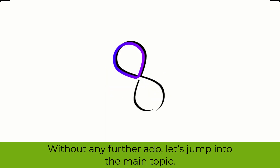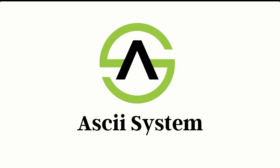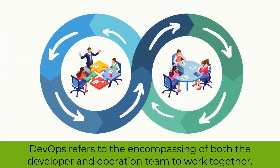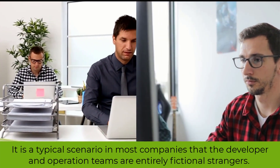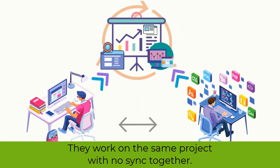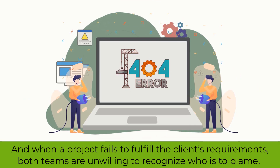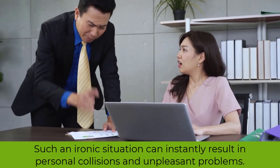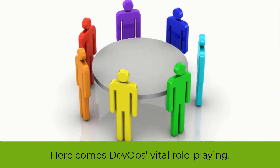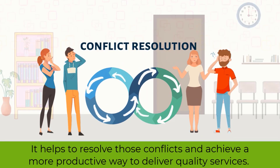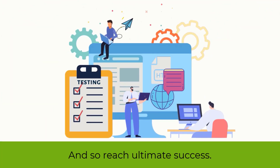Without any further ado, let's jump into the main topic. DevOps encompasses both the developer and operation team to work together. It is a typical scenario in most companies that the developer and operation teams are entirely unfamiliar strangers. They work on the same project with no sync together. And when a project fails to fulfill the client's requirements, both teams are unwilling to recognize who is to blame. Such an ironic situation can instantly result in personal collisions and unpleasant problems. Here comes DevOps' vital role-playing. DevOps stands for Development and Operations. It helps to resolve those conflicts and achieve a more productive way to deliver quality services, and so reach ultimate success.